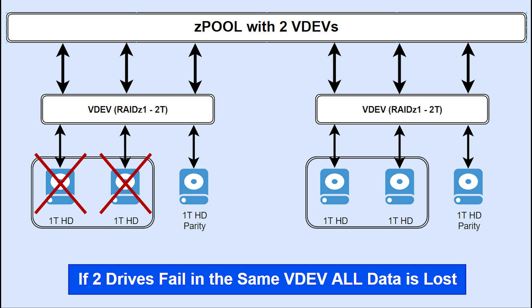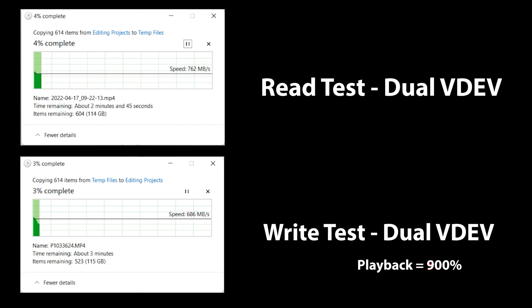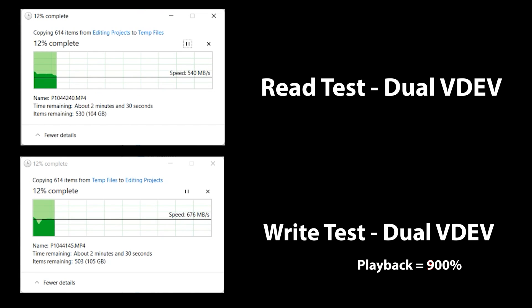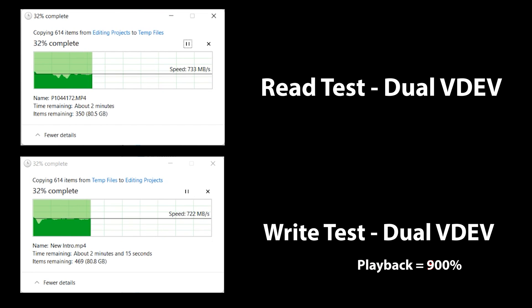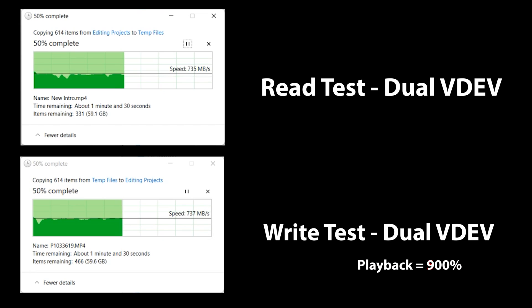Only one drive can fail in either VDAV before you're in trouble. Now that we've increased our storage pool, let's repeat the same test as with a single VDAV. We can now see that both read and write performance are about the same, and that I'm currently saturating my 10G network. Not only did we add more storage, but we also significantly added write performance to our storage.